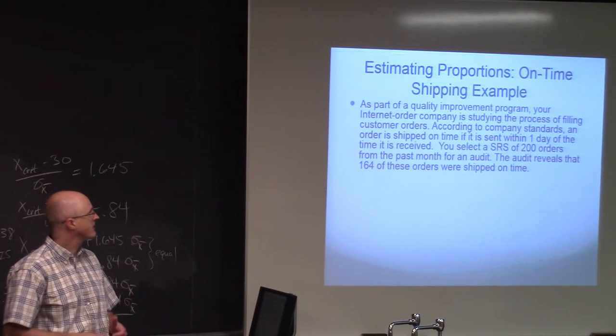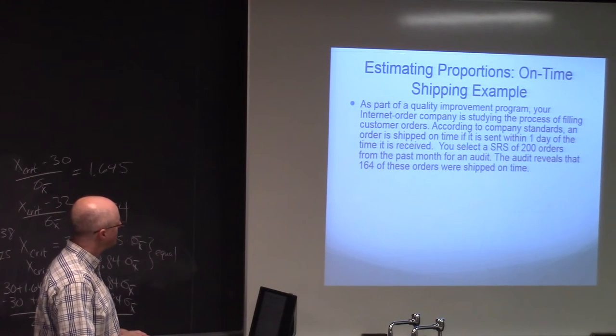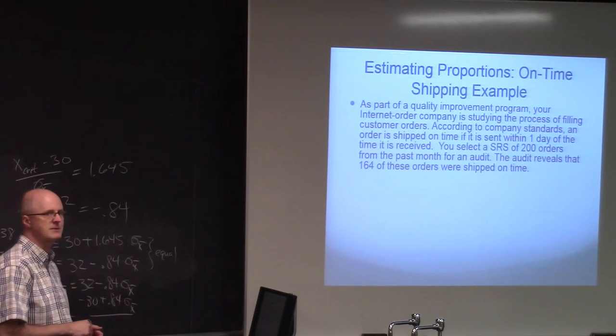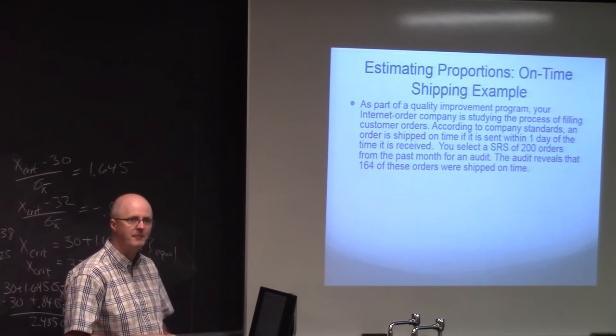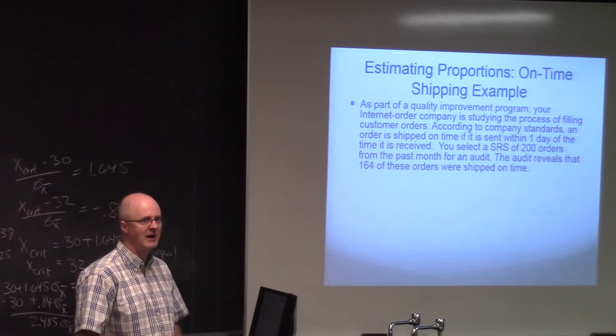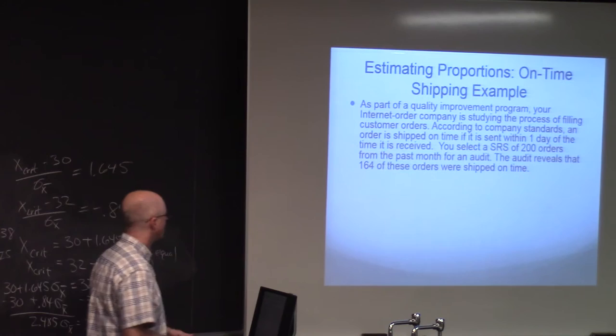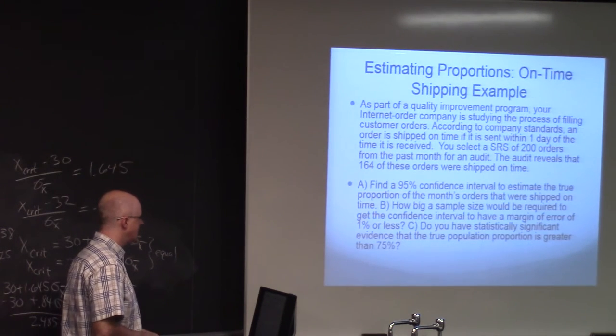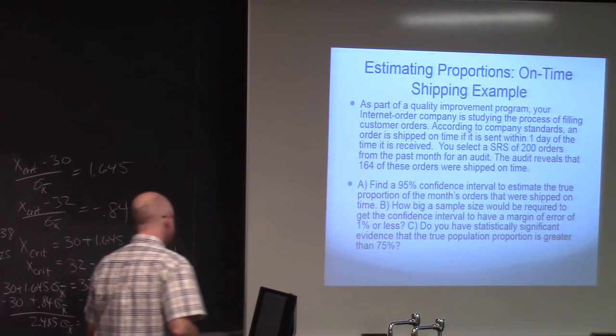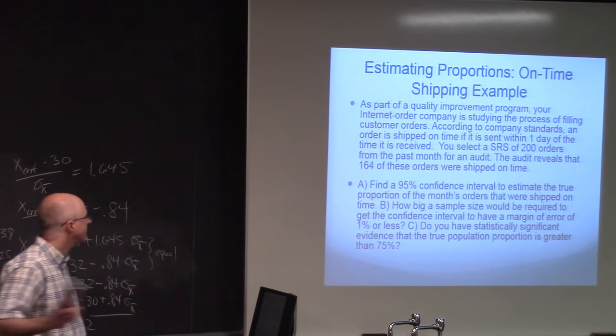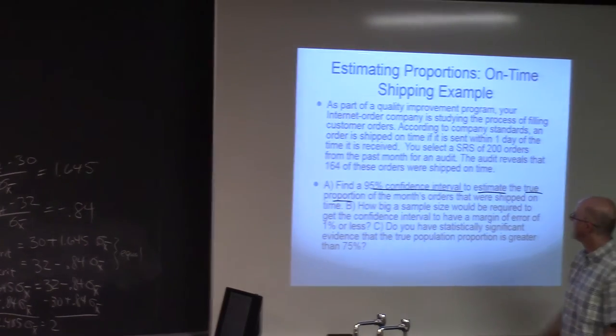Here's our example. As part of a quality improvement program, your internet order company is studying the process of filling customer orders. According to company standards, an order is shipped on time if it is sent within one day of the time it is received. You select a simple random sample of 200 orders from the past month for an audit and the audit reveals that 164 of these orders were shipped on time.